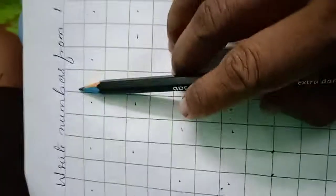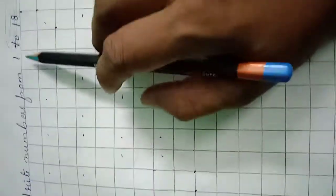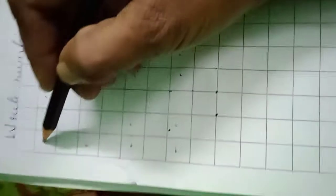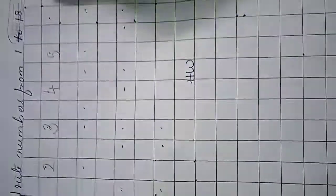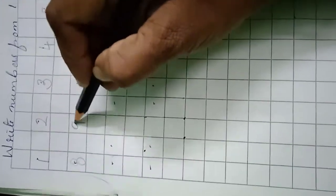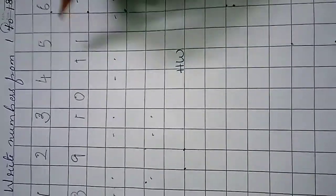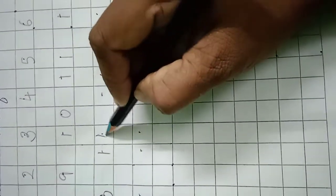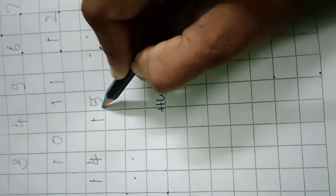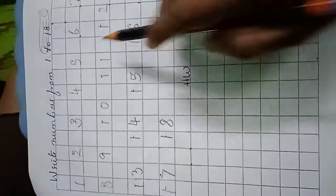Then next — write numbers from one to eighteen. Before you have written one to seventeen. So today you have to write one to eighteen. You should write neatly, you should touch and write the number: one, two, three, four, five, six, seven, eight, nine, ten, eleven, twelve, thirteen, fourteen, fifteen, sixteen, seventeen, eighteen. So like this you have to write one to eighteen numbers, and down you have to do the homework.